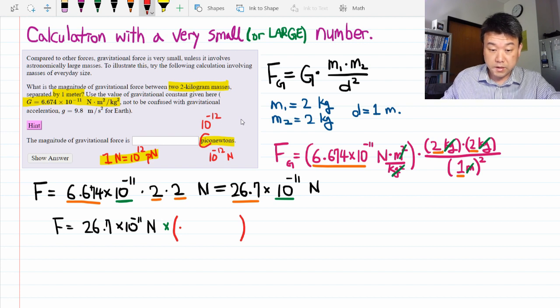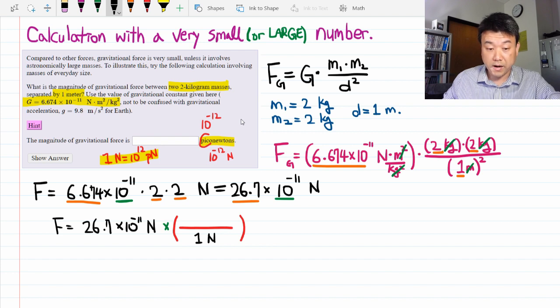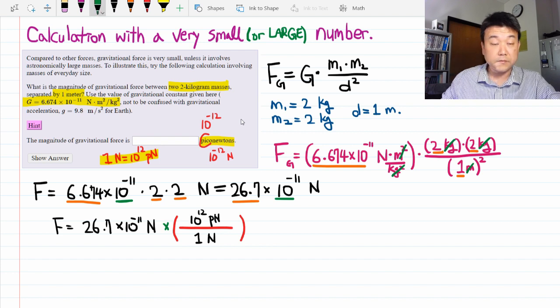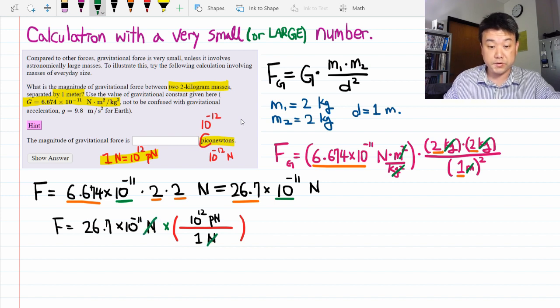For example, 1 newton and 10 to the 12 piconewtons. And you arrange them in a way so that the unit you want to get rid of will cancel out. So here I need to put a newton on the bottom. So in the numerator, I get 10 to the 12 piconewtons. And for those of you working out units, newtons cancel and you're left with the piconewtons.